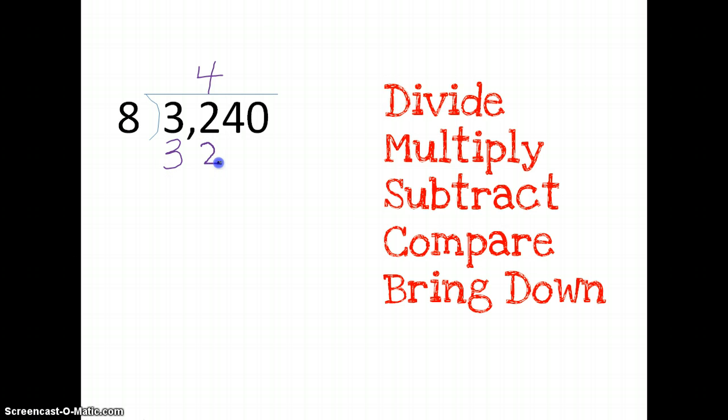So I'm just following my rules over to the side. 32 minus 32 is 0. So I compare. 0 is smaller than 8, so I'm okay. I'm going to bring down. Bring down my 4.